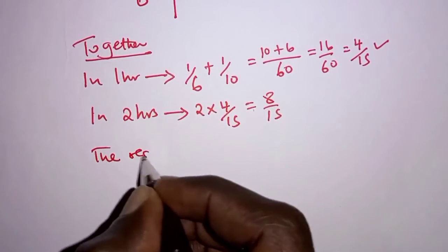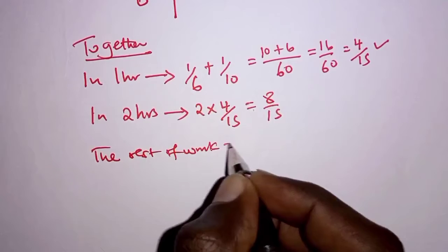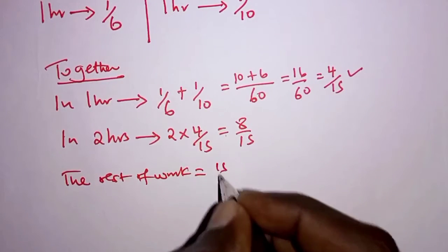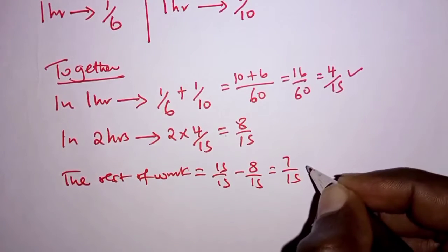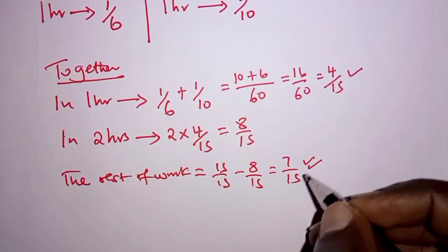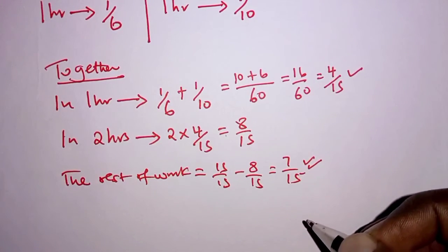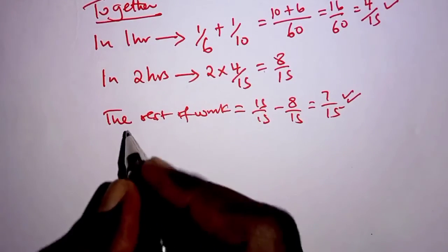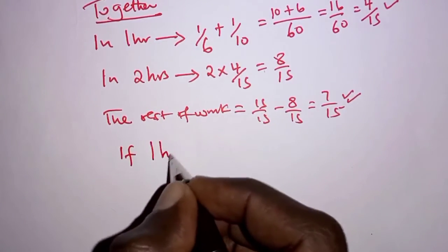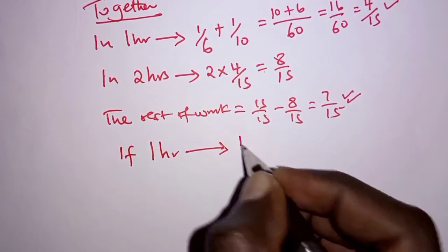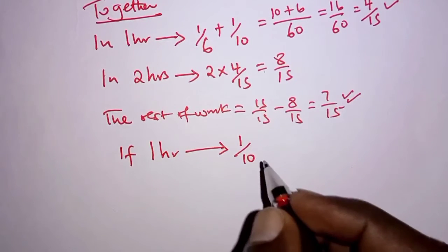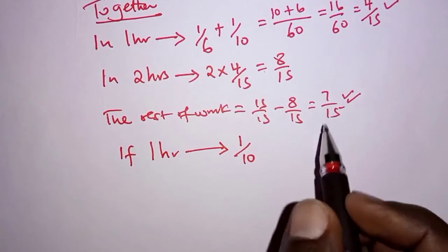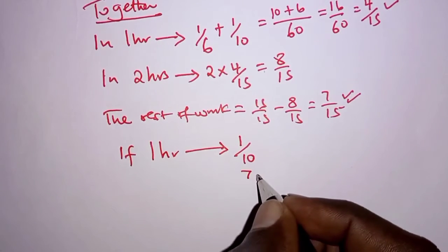After Machine A breaks down, the remaining work is 15/15 minus 8/15, which equals 7/15. So 7/15 is the fraction of work that remains to be completed by Machine B. We then ask: if in one hour Machine B does 1/10 of the work, how long will it take Machine B to complete the remaining 7/15?